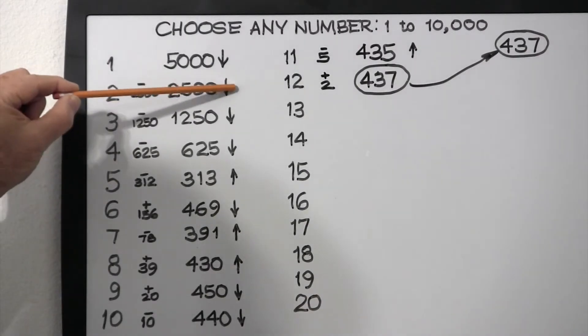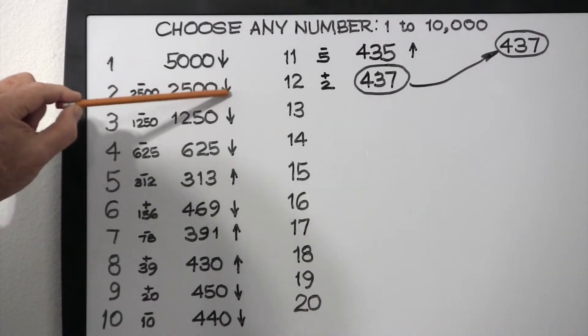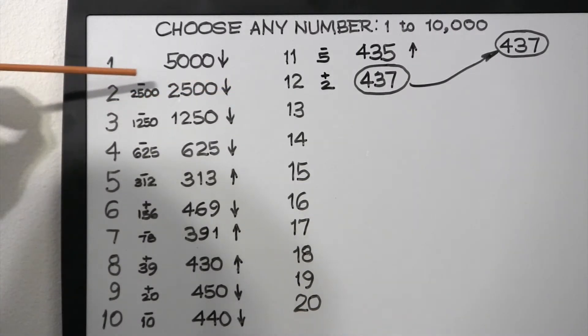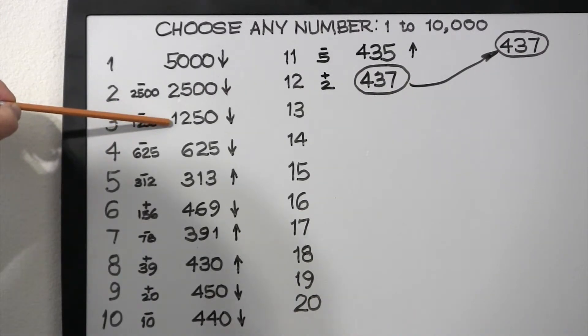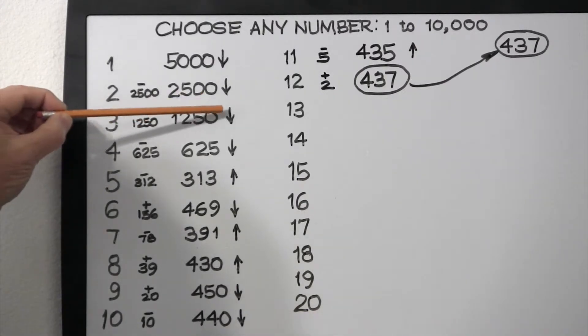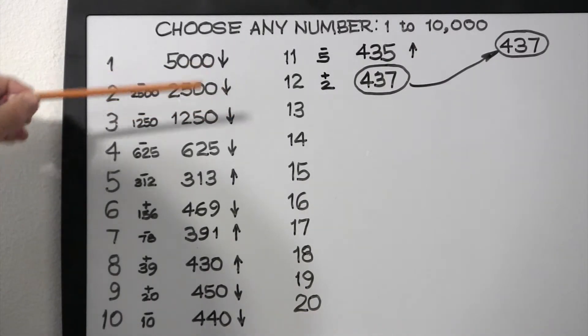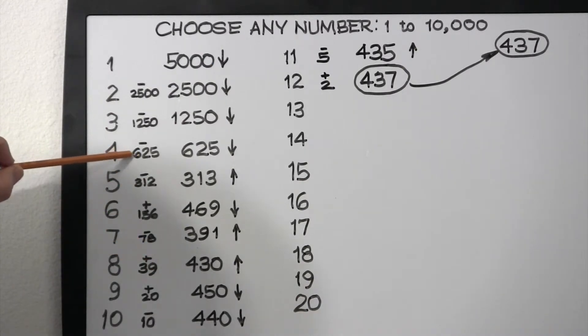You're told again, no, that's too high, you must go down. So now you cut the 2,500 in half and you subtract 1,250, which gives you a guess of 1,250, at which point you're told, no, go down again. So now you subtract 625, which gives you a guess of 625.